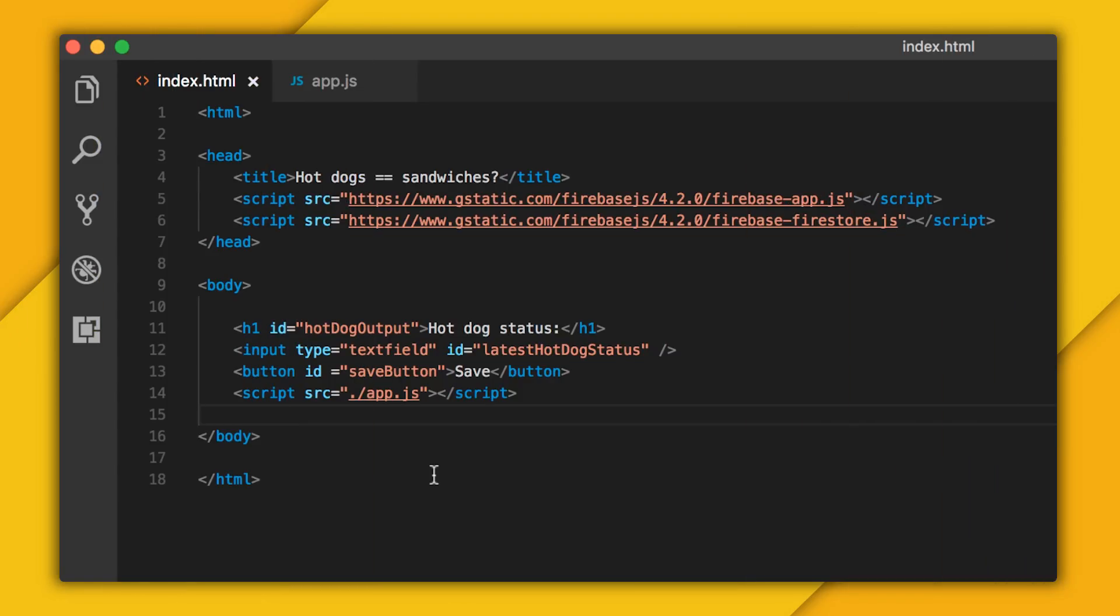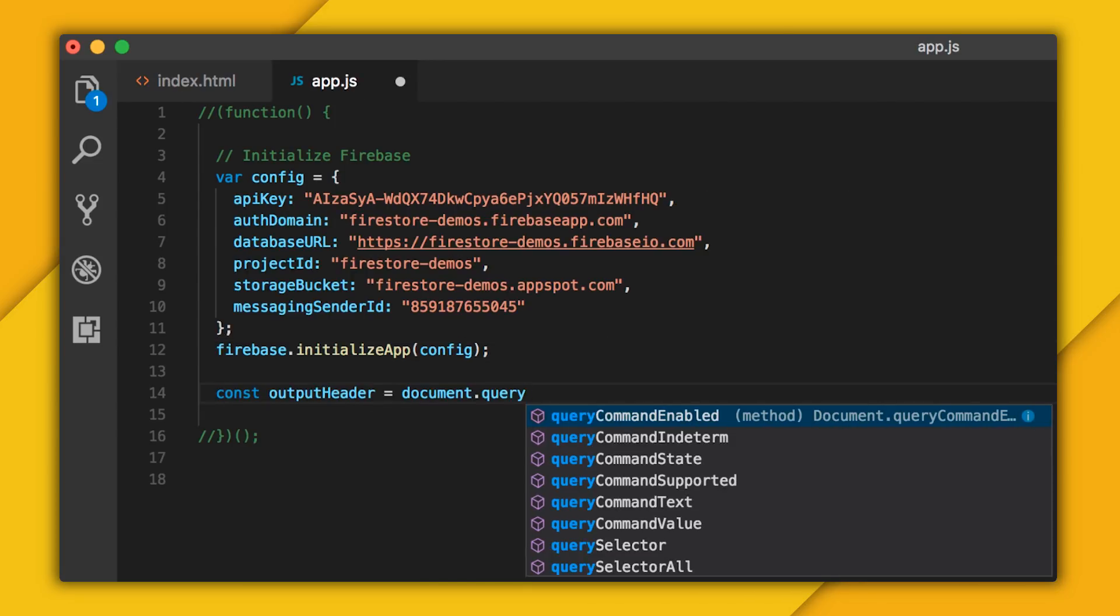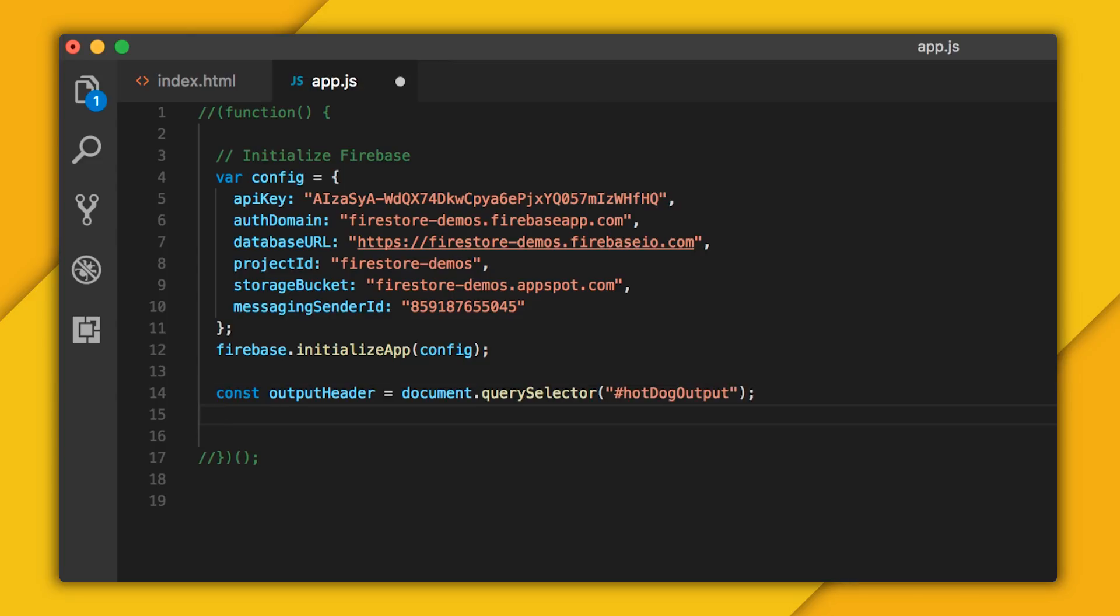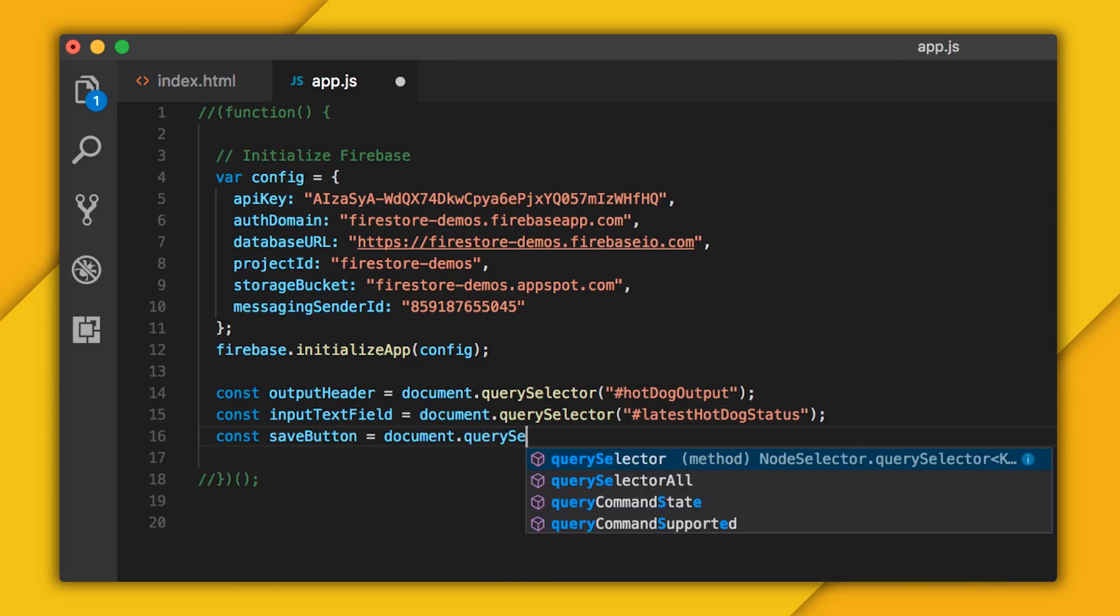So if we jump back into my HTML page, you can see that I've already created IDs for my header, my text field, and my button. So first things first, I'm going to jump into my app.js file and create a few variables to hold references to these elements. And I'll do that just by calling query selector. I'll do the same for my text field and my save button. And we're done.